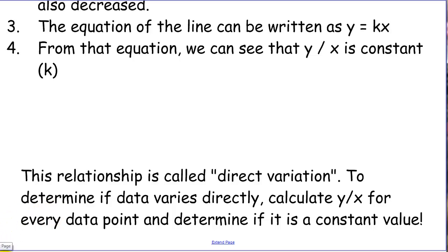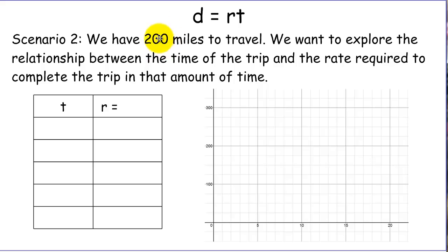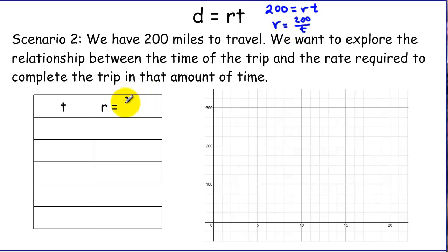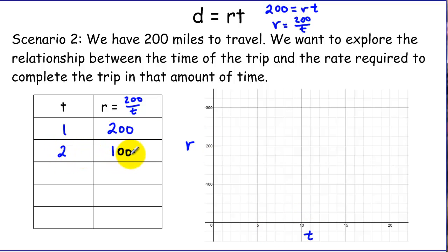Now let's look at another scenario. Here the distance we have to travel is fixed at 200 miles, and we want to explore the relationship between speed and time, with time as the independent variable. Solving for rate gives us 200 divided by t. If we want to complete the trip in 1 hour, we'd travel 200 miles per hour. For 2 hours, 100 mph. For 4 hours, 50 mph. For 10 hours, 20 mph. For 20 hours, 10 mph.